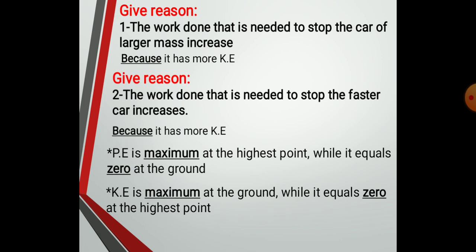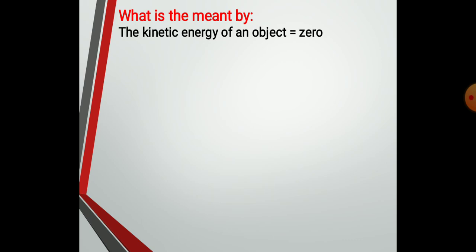Potential energy is maximum at the highest point while it equals zero at the ground. Kinetic energy is maximum at the ground while it equals zero at the highest point. What does it mean when the kinetic energy of an object equals zero? It means the object is at rest.